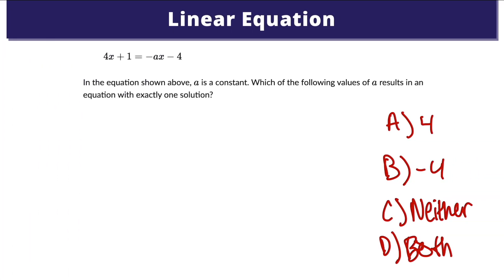Here's our first example of a linear equation. In the equation shown above, a is a constant, and it asks us which of the following values of a results in an equation with exactly one solution. Our answer choices are 4, negative 4, neither, or both.